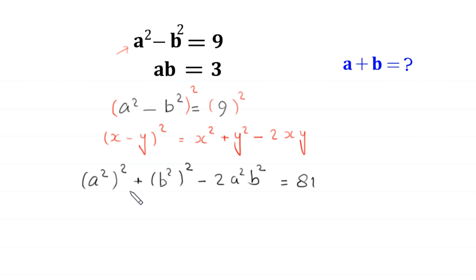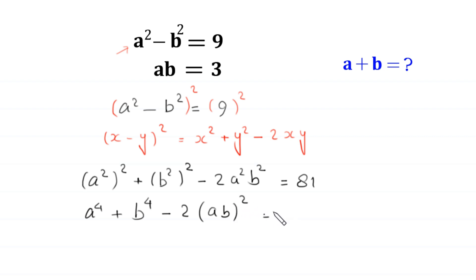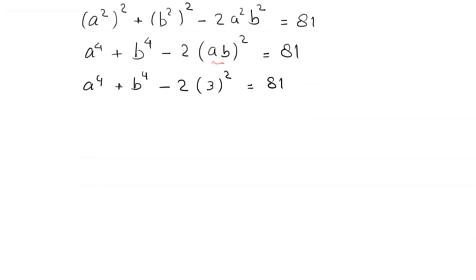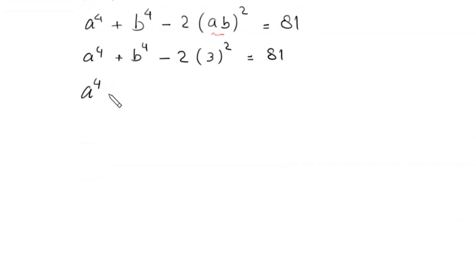Now, a squared whole squared becomes a to the power 4, and b squared whole squared becomes b to the power 4. So we have a to the power 4 plus b to the power 4 minus 2 times a squared b squared equals 81. We can write a squared b squared as (a times b) whole squared. We now replace ab with its value 3, giving us a to the power 4 plus b to the power 4 minus 2 times 3 squared equals 81.